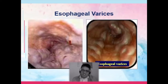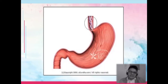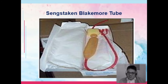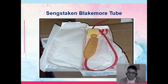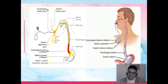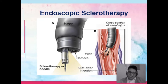Esophageal varices appear like varicosities in the esophagus awaiting rupture — we do not want that to occur. They are usually located at the distal esophagus. The Sengstaken-Blakemore tube and Minnesota tube are capable of applying tamponade. Endoscopic sclerotherapy involves injection of a sclerosing agent into the varices.